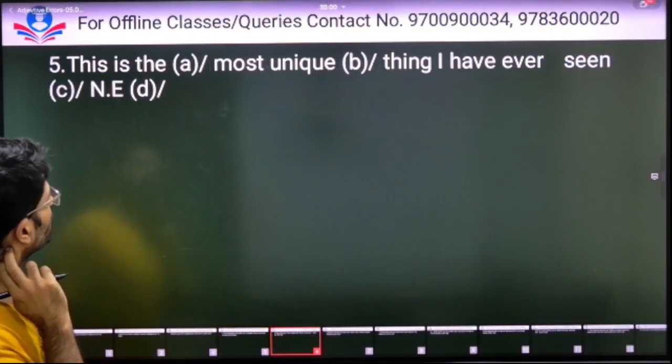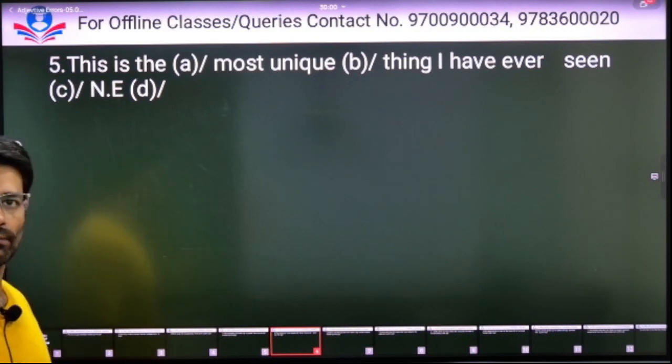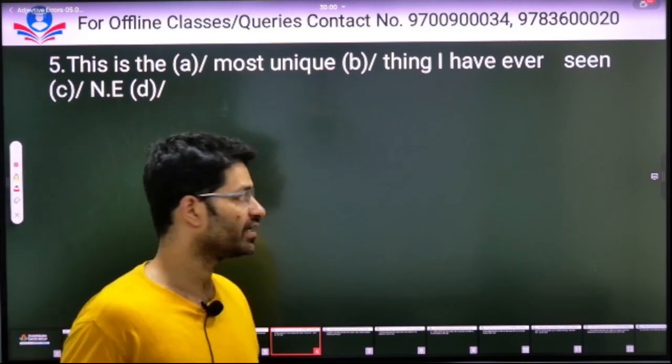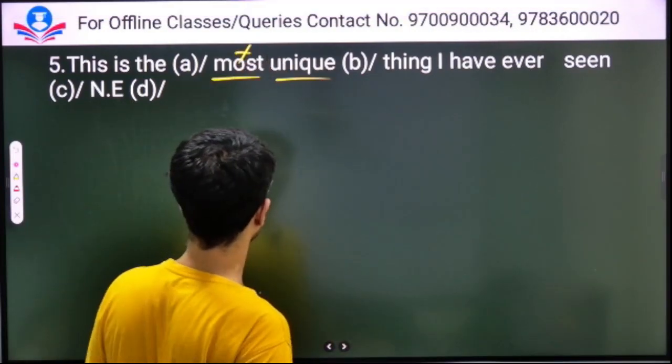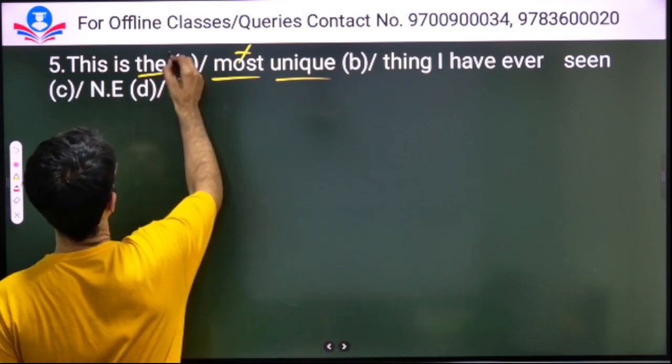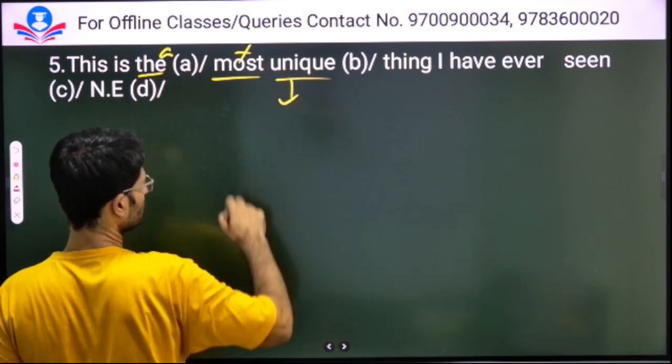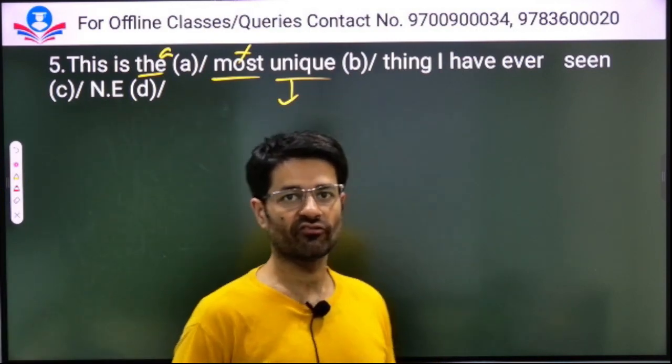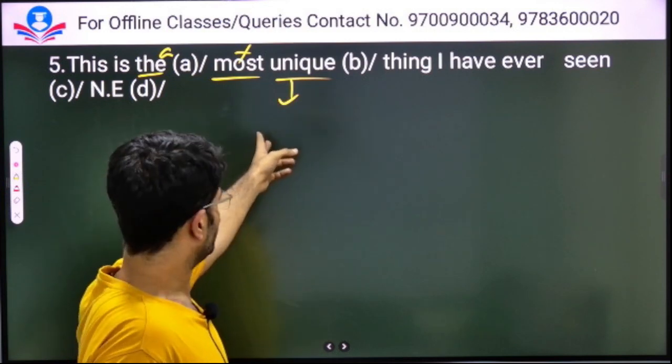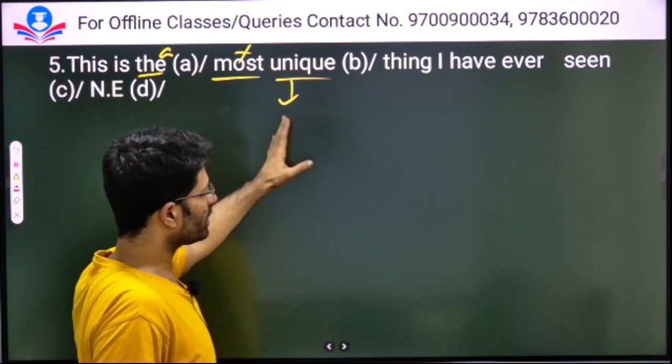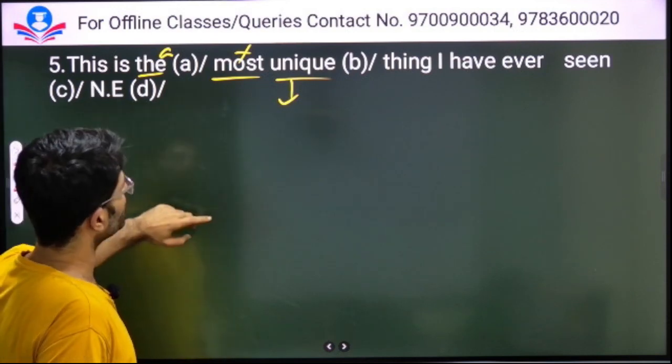This is the most unique thing I have ever seen. Students, I have already mentioned there are some adjectives that don't exhibit different degrees. Unique is one. So 'most unique' will not come. It is a unique thing. Also ideal, perfect, tremendous, triangle, square.